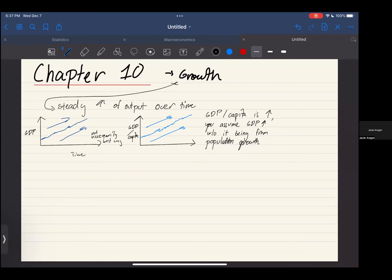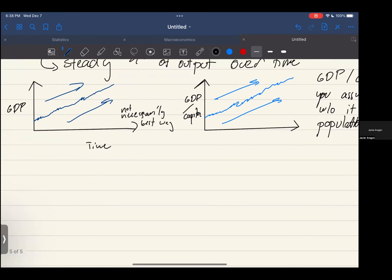For example, if Tuvalu produced a billion dollars and had a billion people, and next year they suddenly go to two billion people and produced two billion as well, the GDP per capita is going to stay the same. But what you want is GDP per capita to grow.